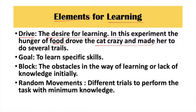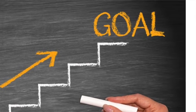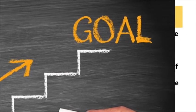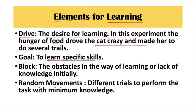The second element is goal. The learner's goal is to learn specific skills or solve a problem. In this experiment, the cat was doing many trials. The goal of the cat was to catch the fish — to get out of the box and eat the fish.